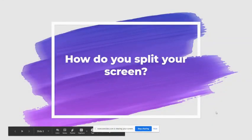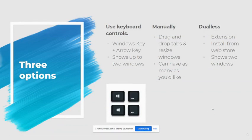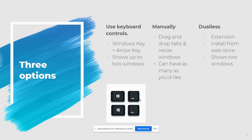So how do you actually go about splitting your screen? We're going to go over three different options in this video. The first one is using your keyboard controls — the Windows key and your arrow key. This allows you to show up to two windows on your screen at the same time. If two windows isn't enough, you'll want to use the manual method, which lets you drag, drop, and resize tabs to fit as many windows as you'd like. Finally, you can use the extension called Dualless, installed from the Chrome Web Store, which again allows you to see two windows side by side.